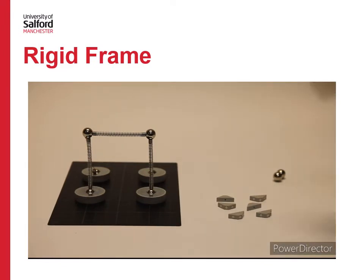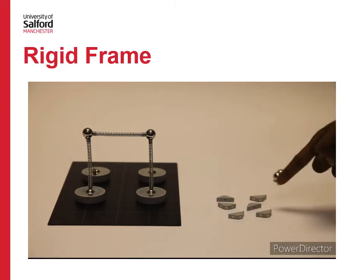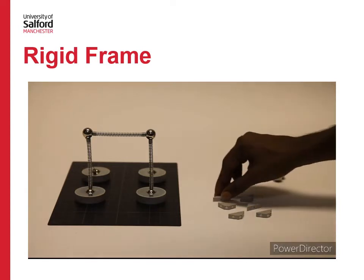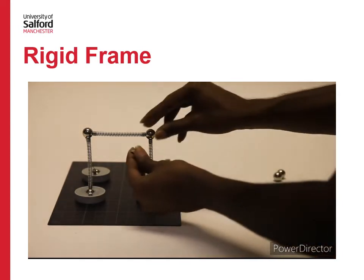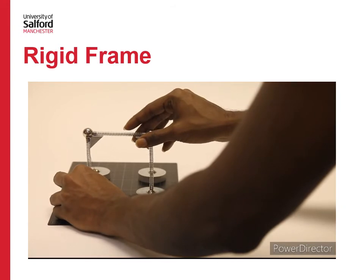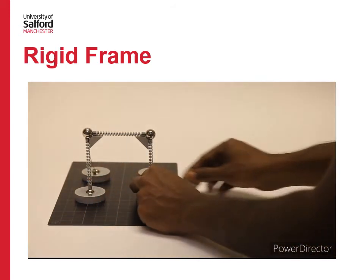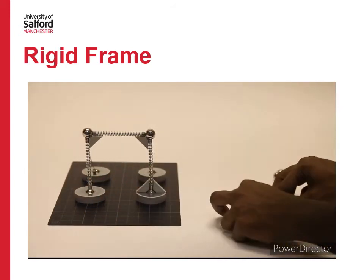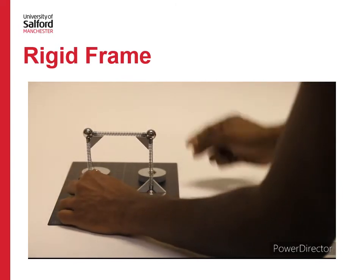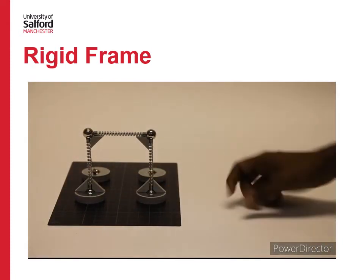Now let us see how to make a rigid frame. The joints are hinged, so let us use blocks to resist the rotation at the joints — in other words, to make them rigid joints. These blocks are placed at the junctions between column and beam to resist rotation, and the same is done at the support to make it rigid as well. Our rigid frame is now ready.